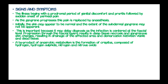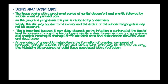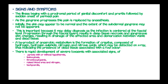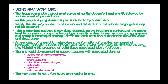A byproduct of anaerobic metabolism is the formation of crepitus, composed of hydrogen, hydrogen sulfide, nitrogen, and nitrous oxide, which may be detected on X-rays, indicating the presence of dead tissue associated with a foul odour. There is rapid development of severe toxemia associated with signs of pyrexia with or without hypothermia, leukocytosis, thrombocytopenia, raised blood urea and nitrogen, tachycardia, hypotension, and reduced urine output. This may occur in just a few hours, progressing to organ failure and death.